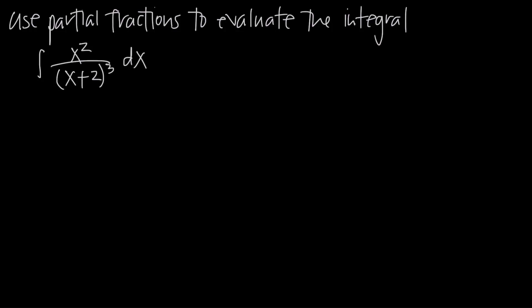In this video we're going to be talking about how to use partial fractions to evaluate an integral. In this particular problem we're taking the integral of x squared divided by quantity x plus 2 cubed. We're going to use partial fractions because we have a rational function, and more specifically we're going to need to use repeated linear factors because we have a repeated linear factor in the denominator.